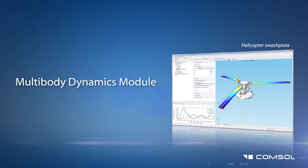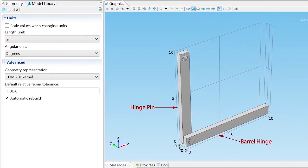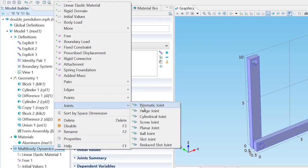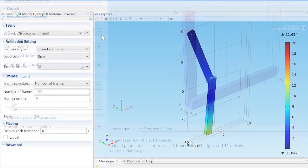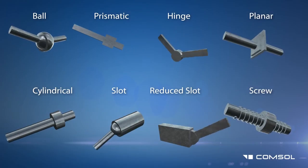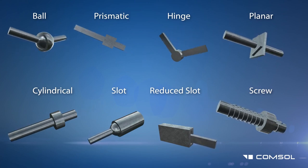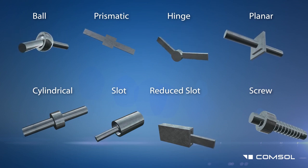COMSOL is continuing to answer requests from customers to build out new functionality, and this is epitomized by the release of the Multibody Dynamics module. This module is an add-on to the Structural Mechanics module and will be delivered free of charge to all who have an active subscription. A library of eight different joint types is provided, such as hinge, prismatic, ball, and cylindrical joints, to simulate the connection between different components in an assembly.